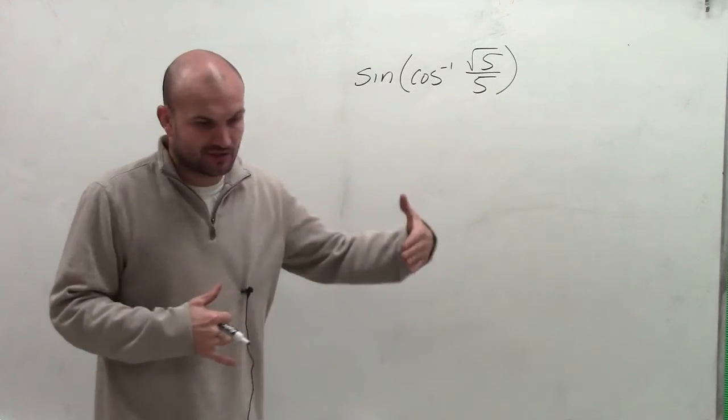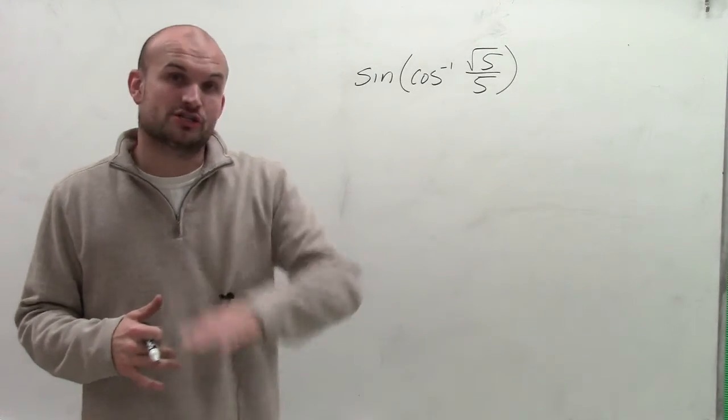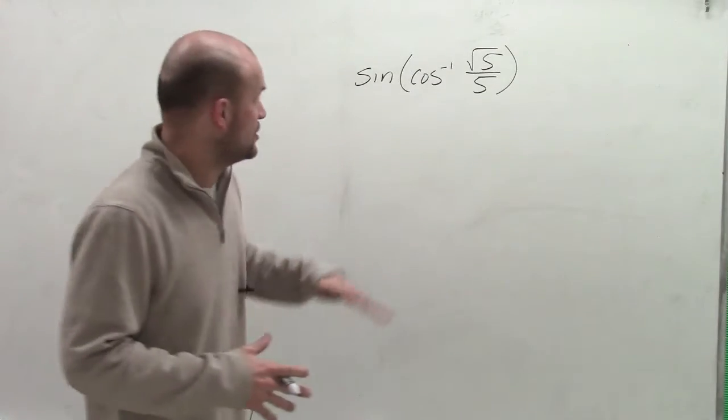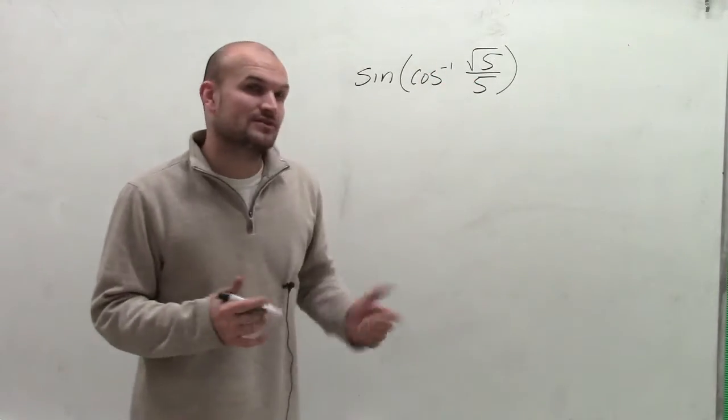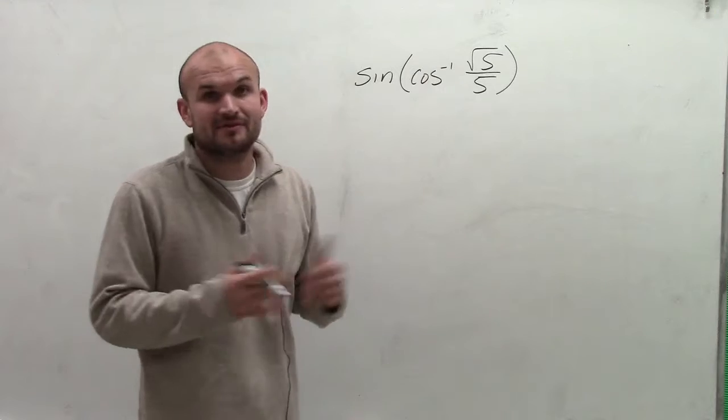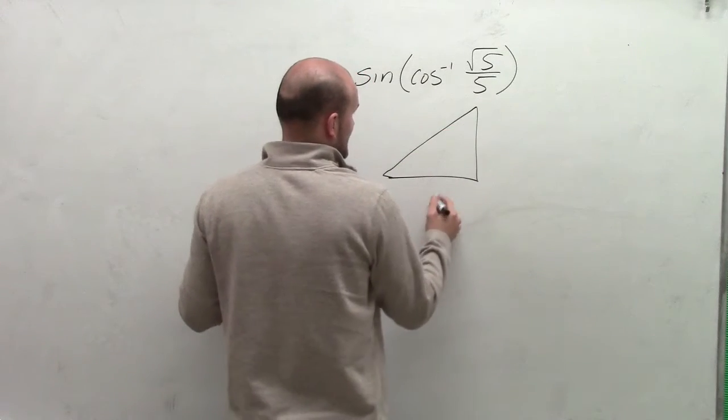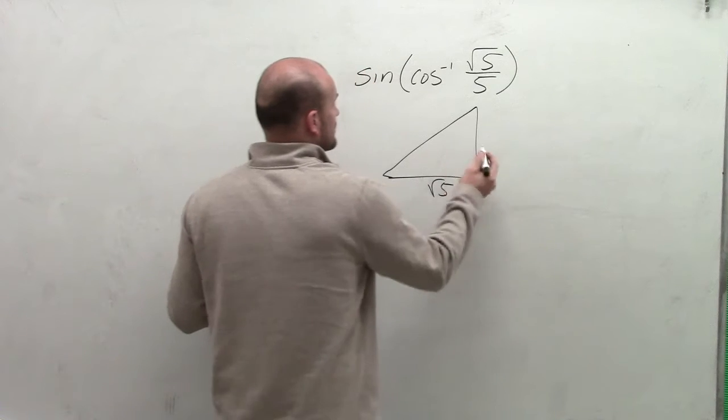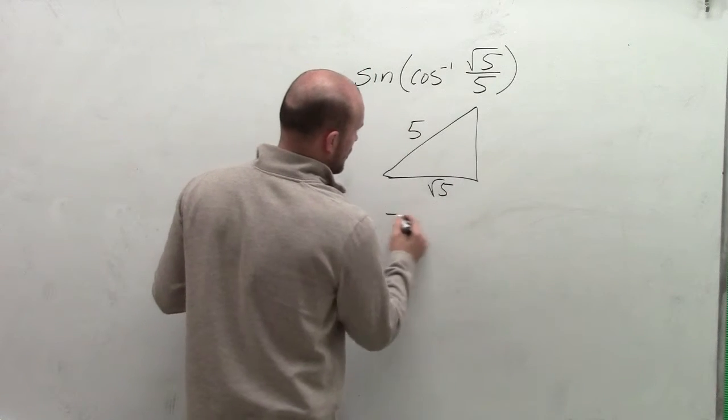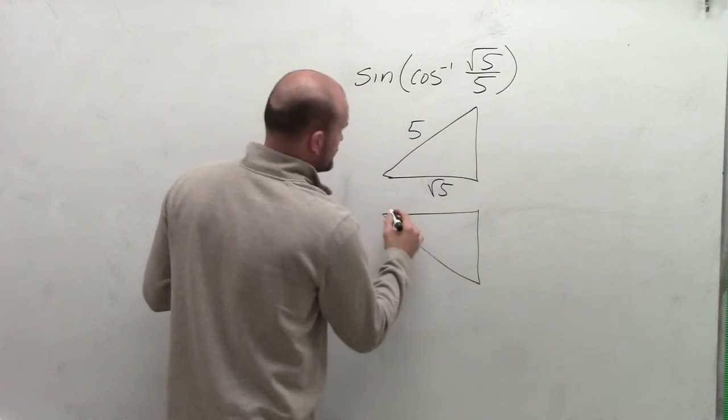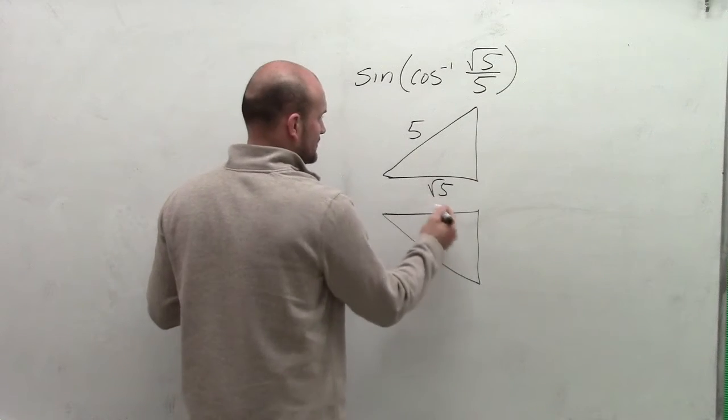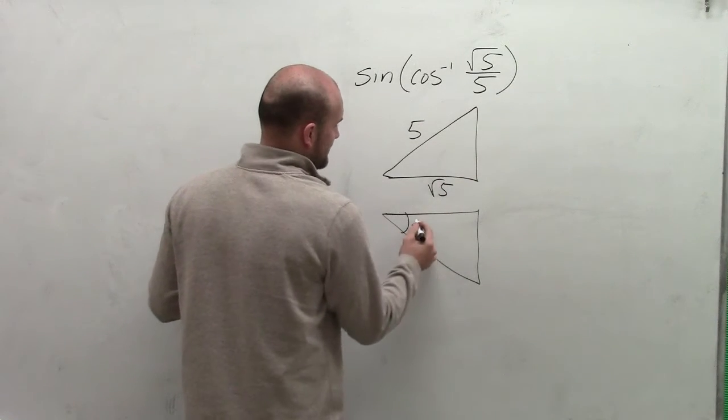Remember, the inverse cosine represents that you're adjacent over your hypotenuse. So there's two different triangles that I could write where square root of 5 divided by 5. My two triangles could look something like this: I could have the square root of 5 adjacent over hypotenuse, or I could have the square root of 5 over 5 here, where both these distances are square root of 5 of theta.